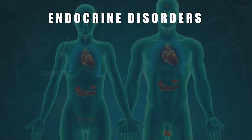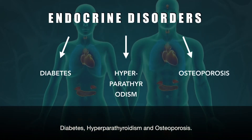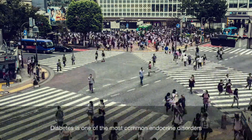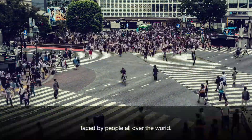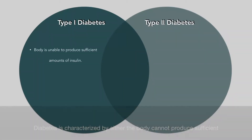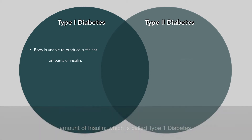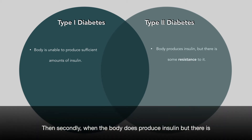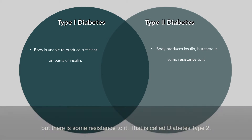Common endocrine disorders include diabetes, hyperparathyroidism, and osteoporosis. Diabetes is one of the most common endocrine disorders faced by people all over the world. Diabetes is characterized by either the body cannot produce sufficient amount of insulin, which is called diabetes type 1, or secondly, when the body does produce insulin but there is some resistance to it, and that is called diabetes type 2.